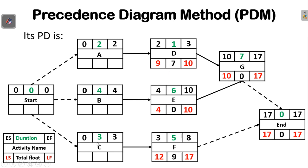For activity C, the late finish time is the late start time of activity F, which is 12. The late start time is 12 minus 3, giving 9. The total float is the difference between late finish and early finish, giving 12 minus 3, which is 9.